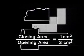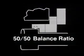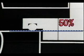If we compare the closing area to the opening area, we find a 50 percent ratio. This area ratio of 50 percent is called a 50-50 balance ratio. This means that 50 percent of the opening area is exposed to the closing force.